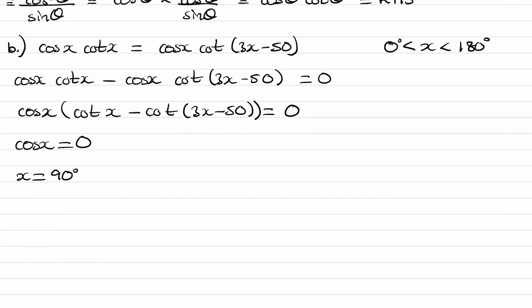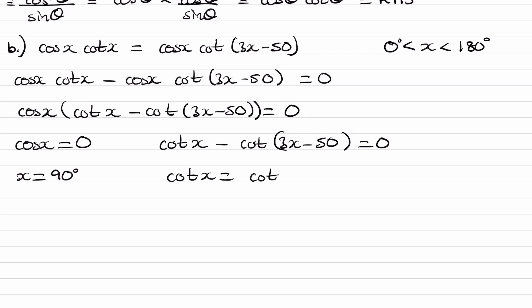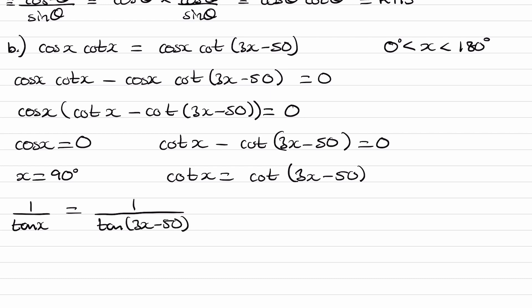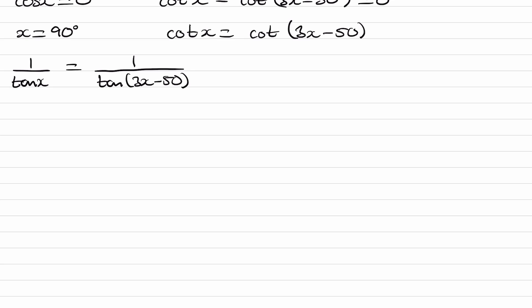Now we can move on to the other part of this equation. The cot x minus cot(3x minus 50) equals 0. We can rearrange this: cot x equals cot(3x minus 50). And then we can use the fact that cot is 1 over tan. So this becomes 1 over tan x equals 1 over tan(3x minus 50). We can then take the reciprocal of both sides: tan x equals tan(3x minus 50).